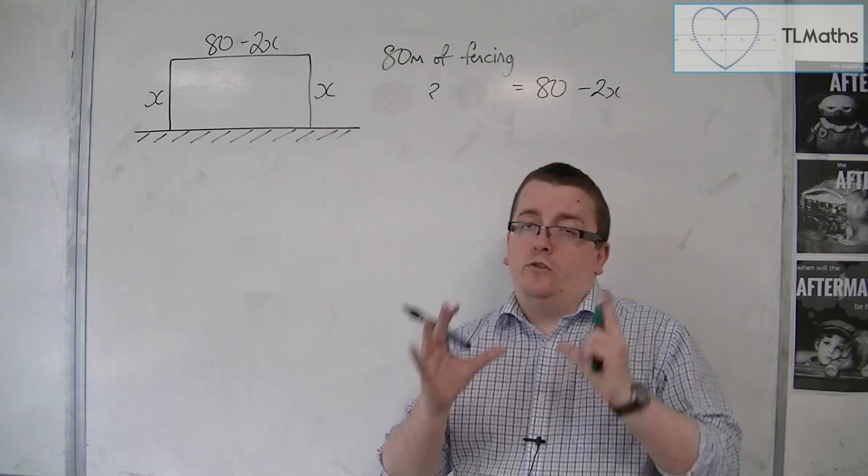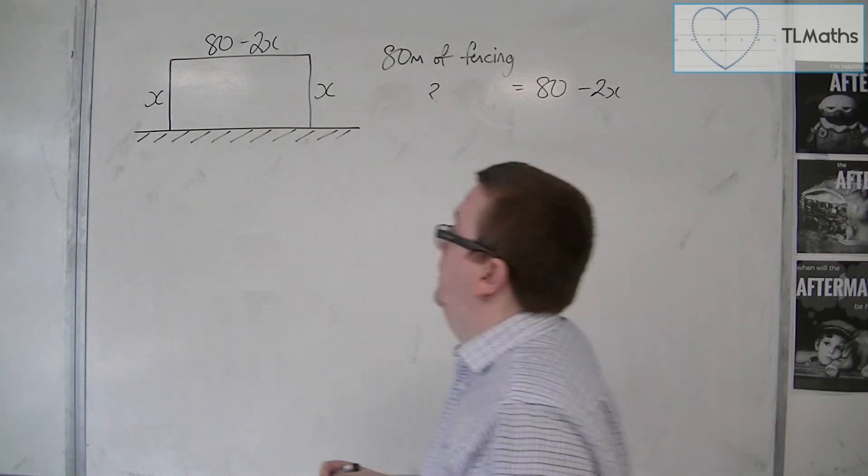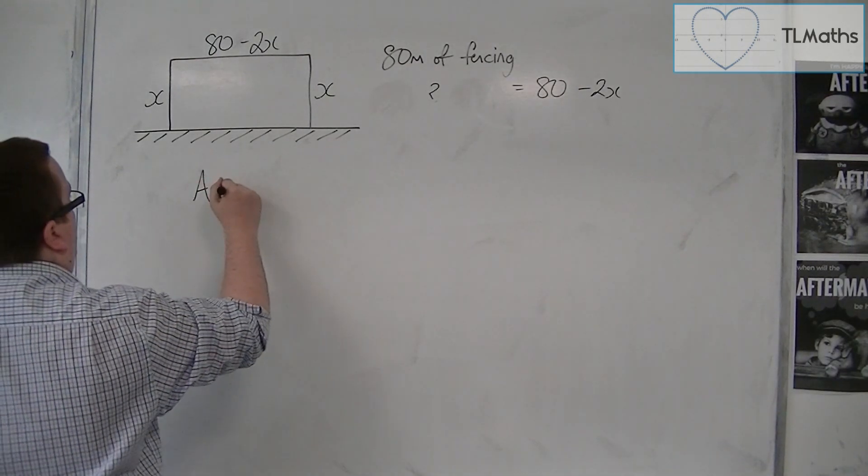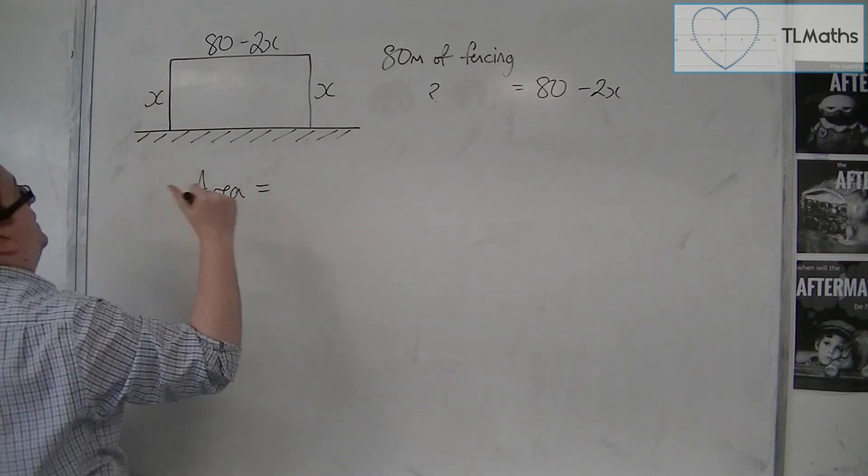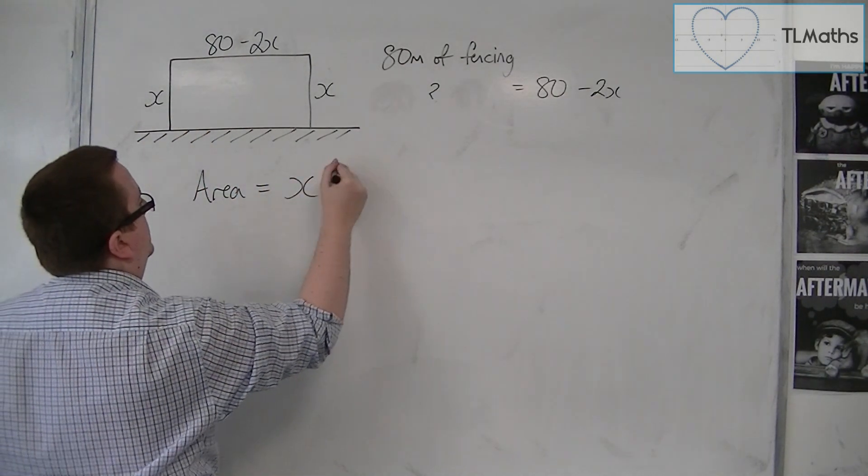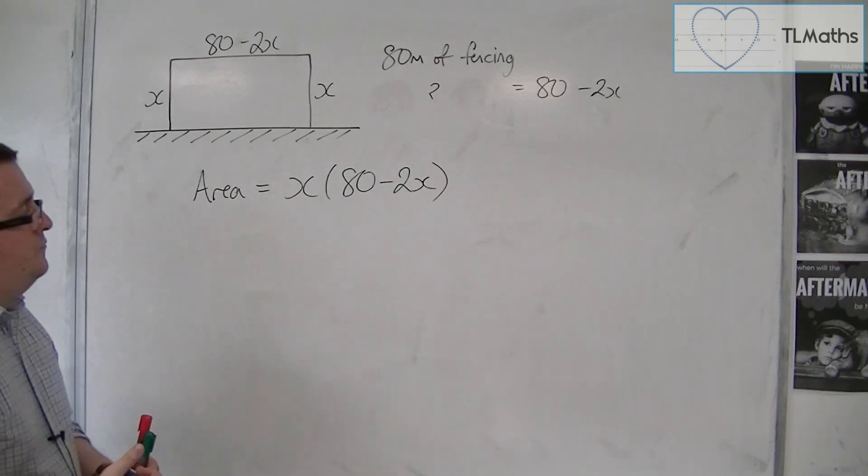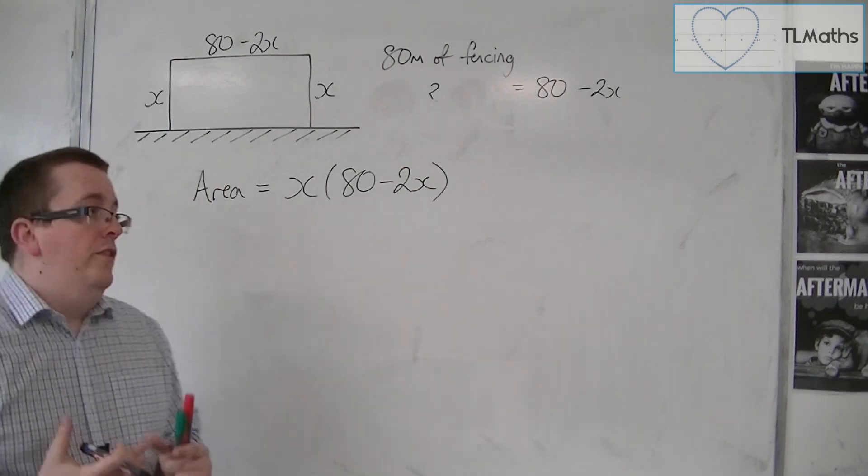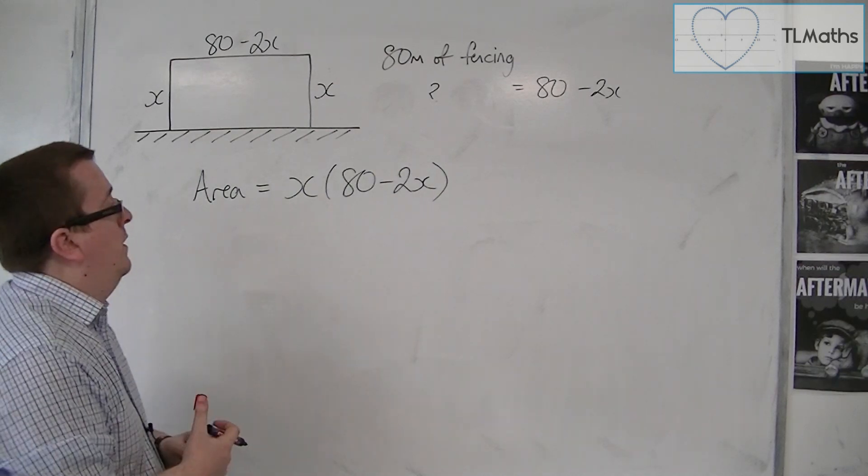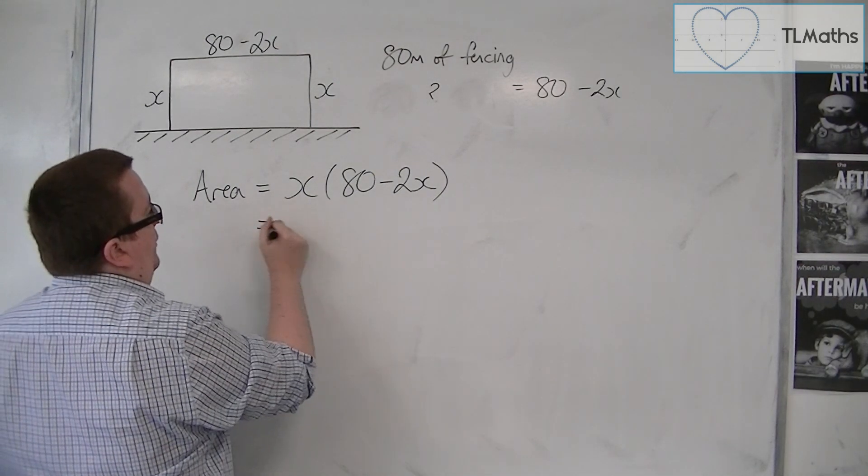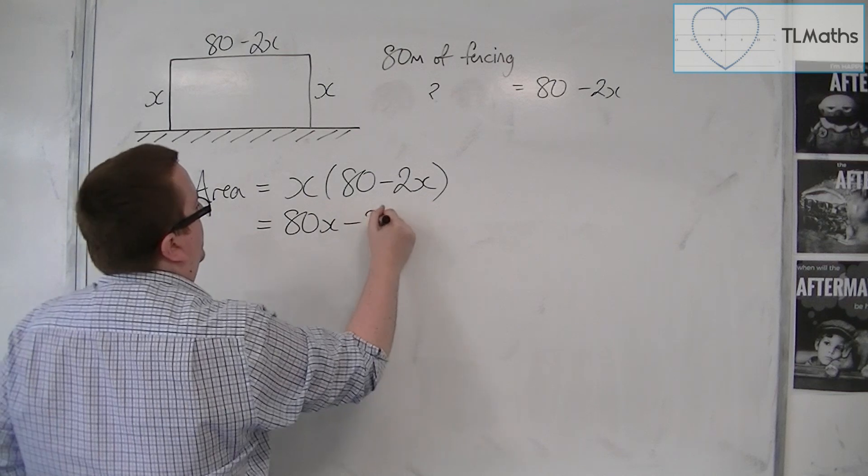So if I take the two x's from both sides, then that side I could write as 80 minus 2x. So that sets up the sides of the rectangle. Now the area of a rectangle, because that's what we want to maximize, can be found by multiplying the x by the 80 minus 2x. So I could expand that if I wanted to, so 80x minus 2x squared.